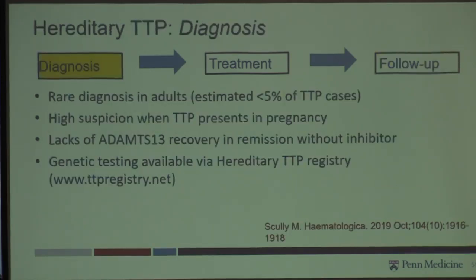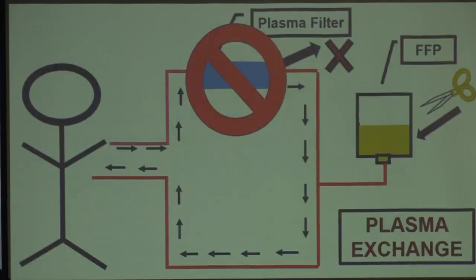For patients with hereditary TTP — a rare diagnosis in adults, estimated at less than 5% of cases — genetic testing is available. They are treated similarly to patients with immune TTP, except we don't need to eliminate an antibody, so we can use plasma infusion rather than full plasma exchange. Plasma infusion isn't sufficient for immune TTP, but it is for congenital TTP.